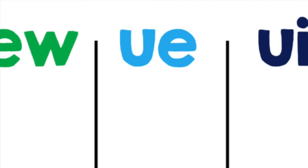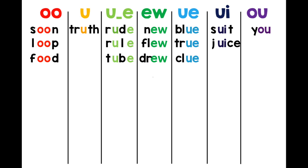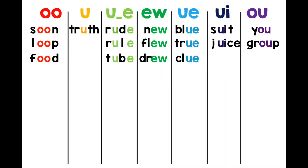The last way to spell OO is O-U. Let's look at some examples. Our first word is you: Y-O-U. We also have group: G-R-O-U-P.